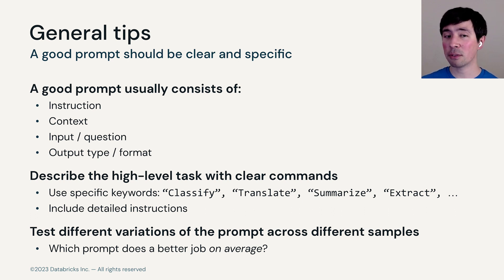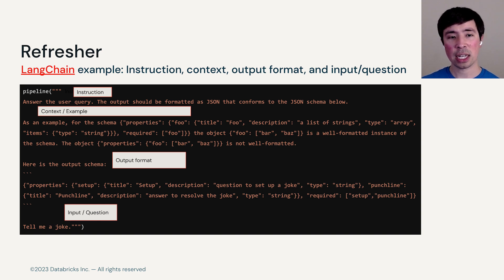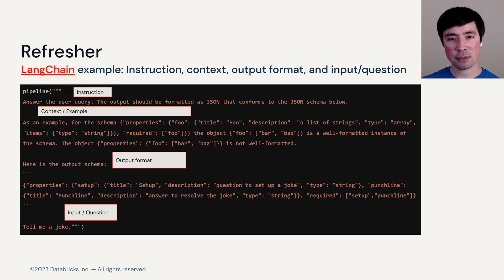This is engineering, so test different variations of the prompt across different samples and use a data-driven approach. What prompt does better, on average, for your set of inputs? As a refresher, we saw this example in the last video of LangChain giving a prompt with different components: a very clear instruction, context or an example, a specification of the output format, and then the actual user query input — 'Tell me a joke.'